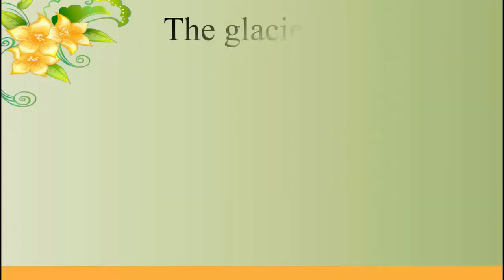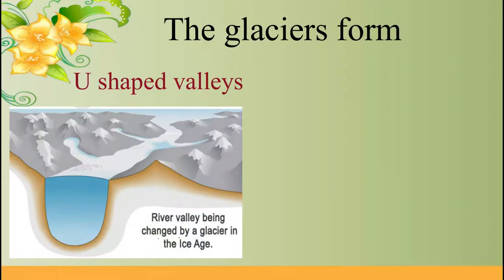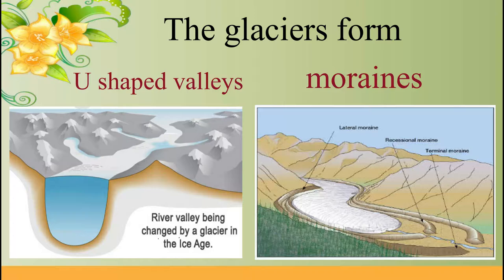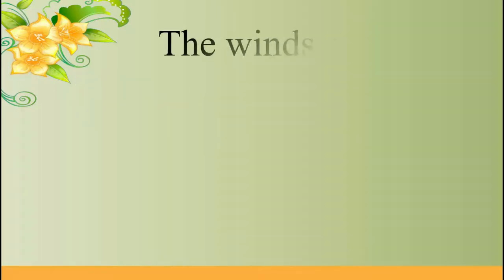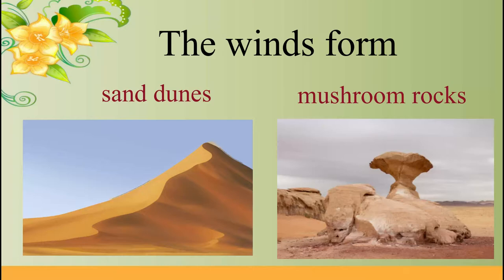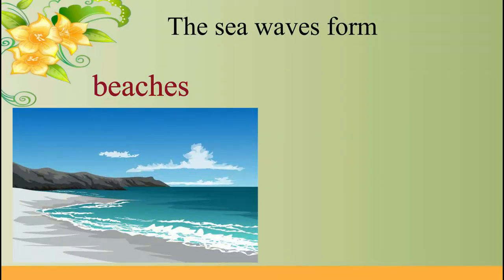The glaciers form U-shaped valleys and moraines. The winds form sand dunes, mushroom rocks, etc. The sea waves form beaches and cliffs.